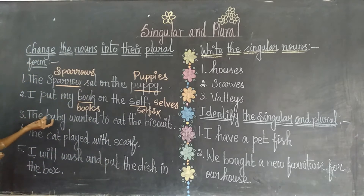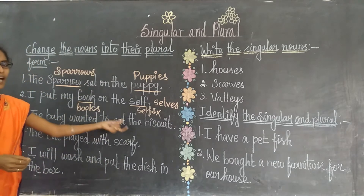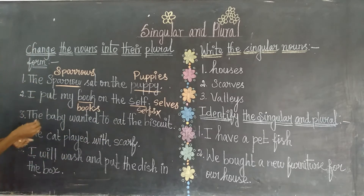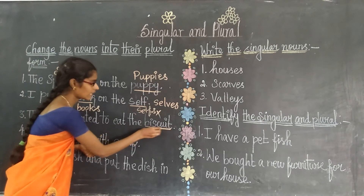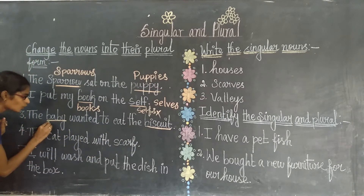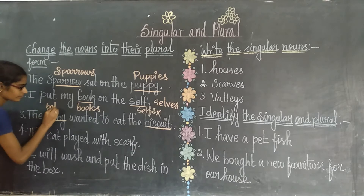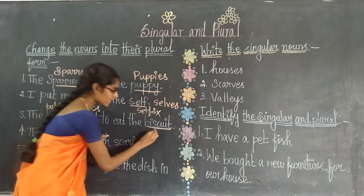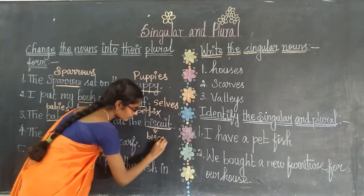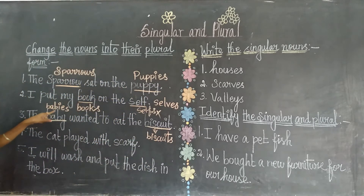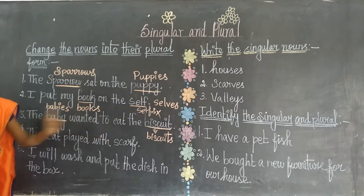The third example: 'The baby wanted to eat the biscuit.' Baby and biscuit are the two nouns. Baby changes to babies, and biscuit changes to biscuits.